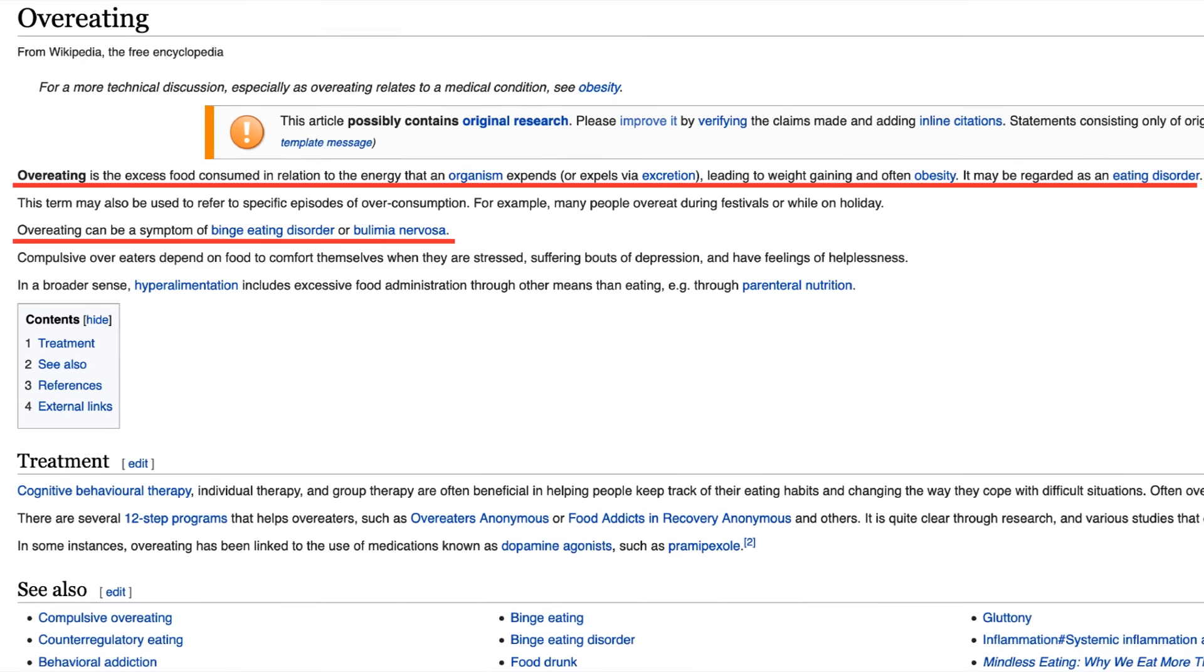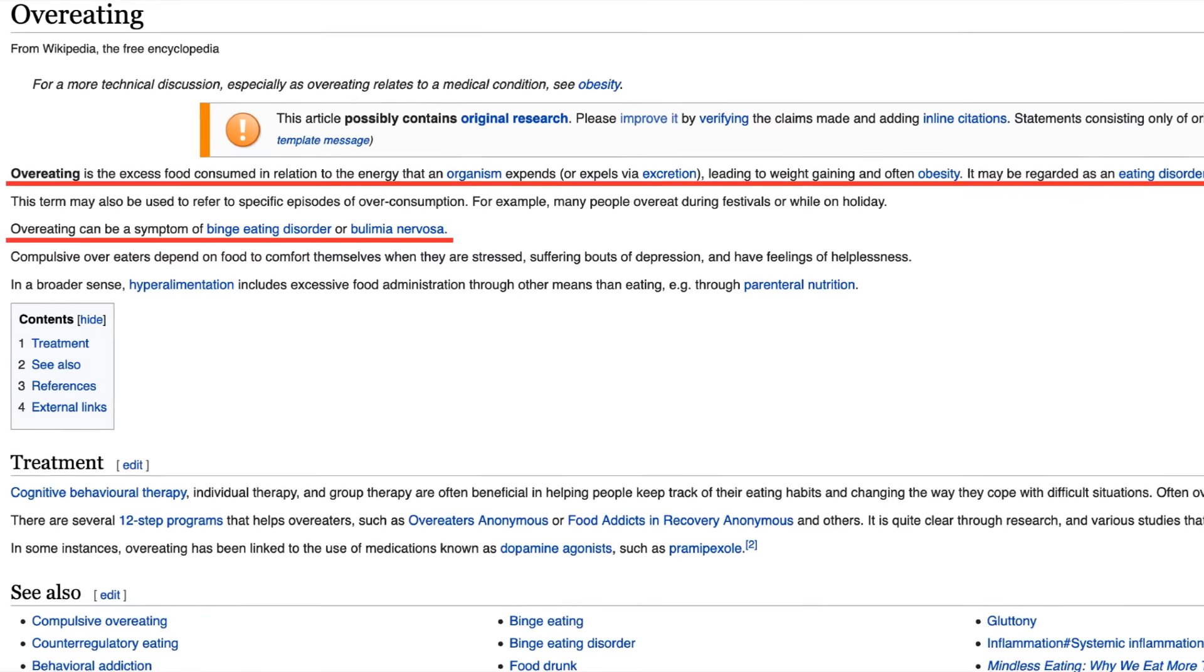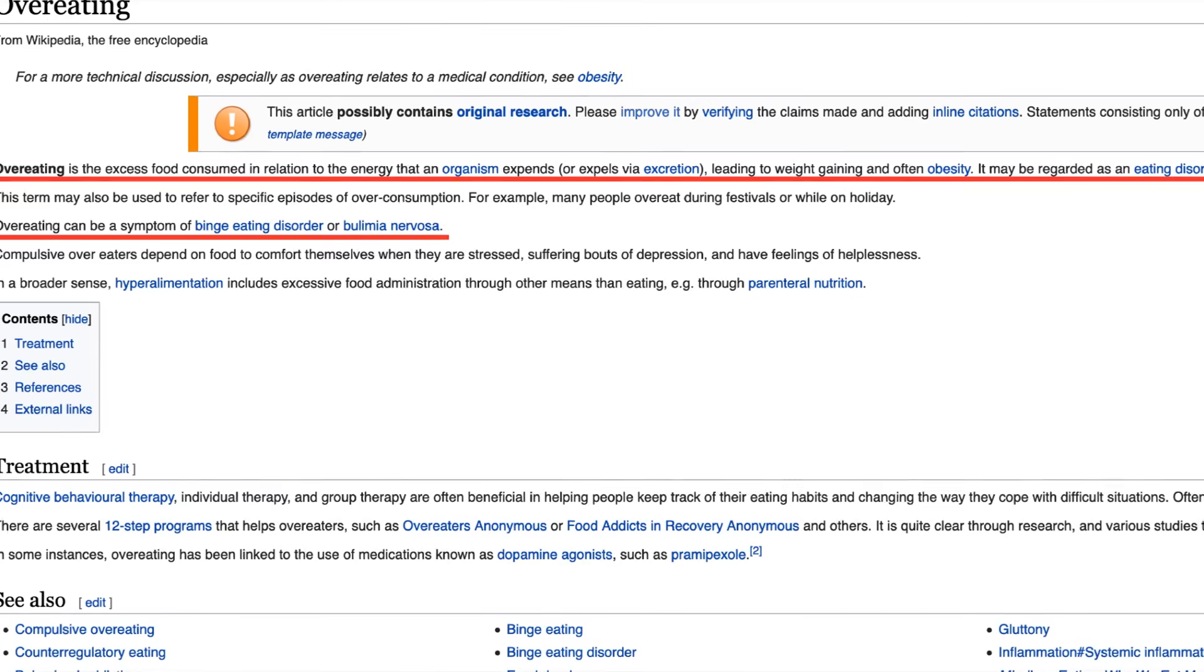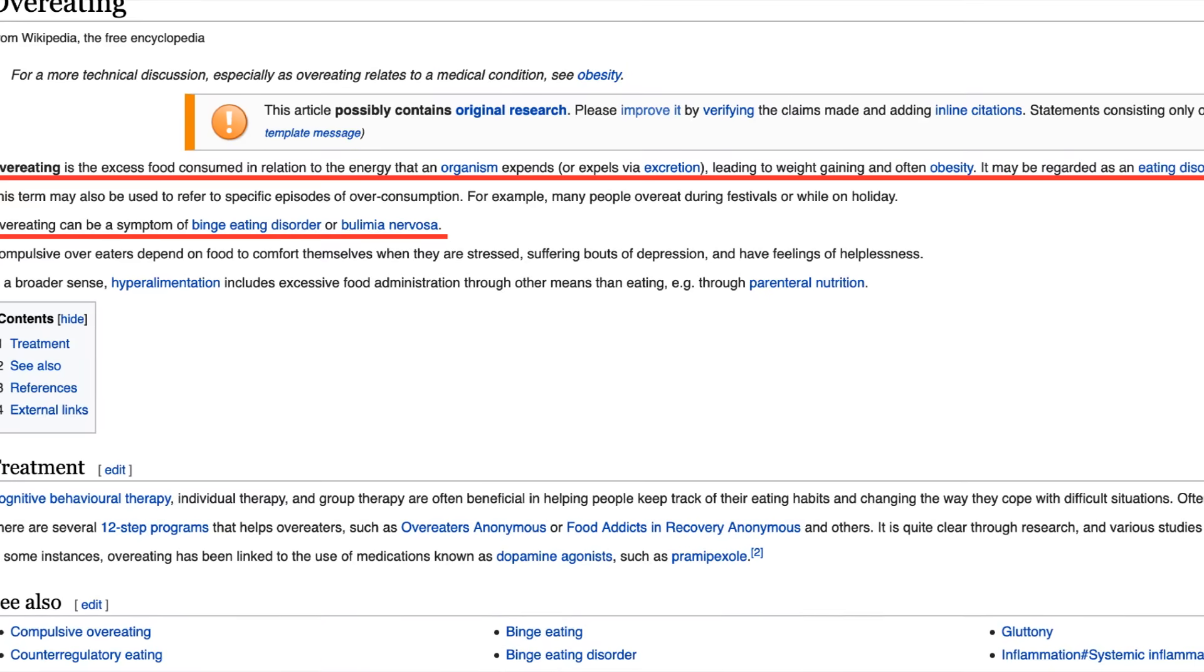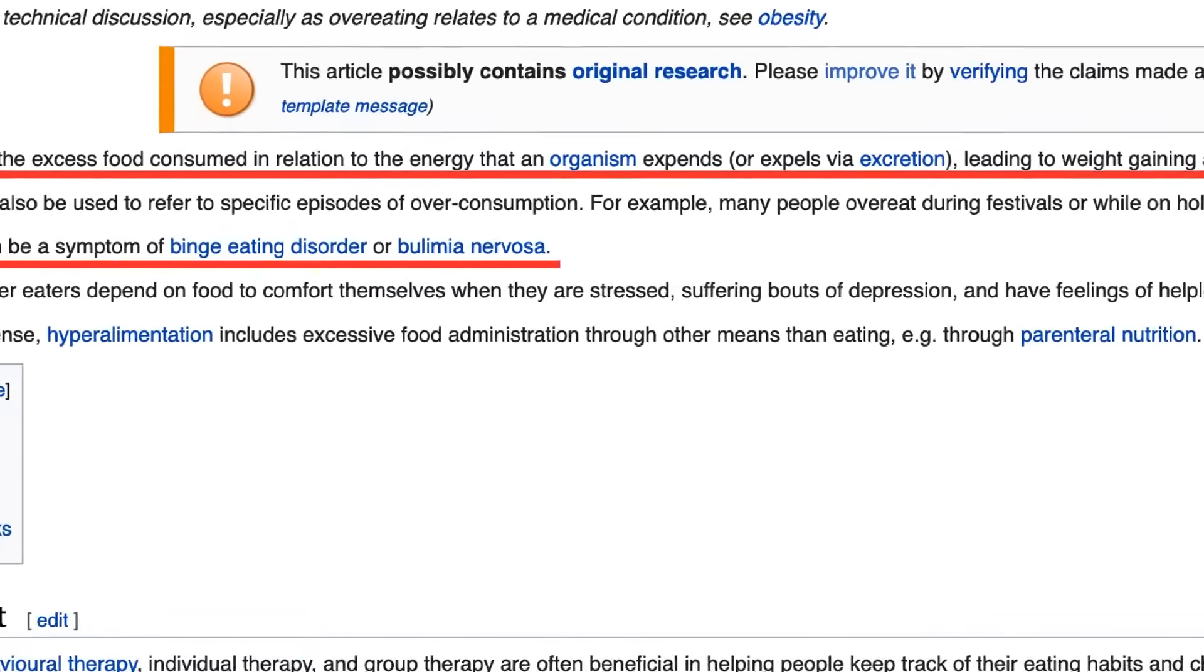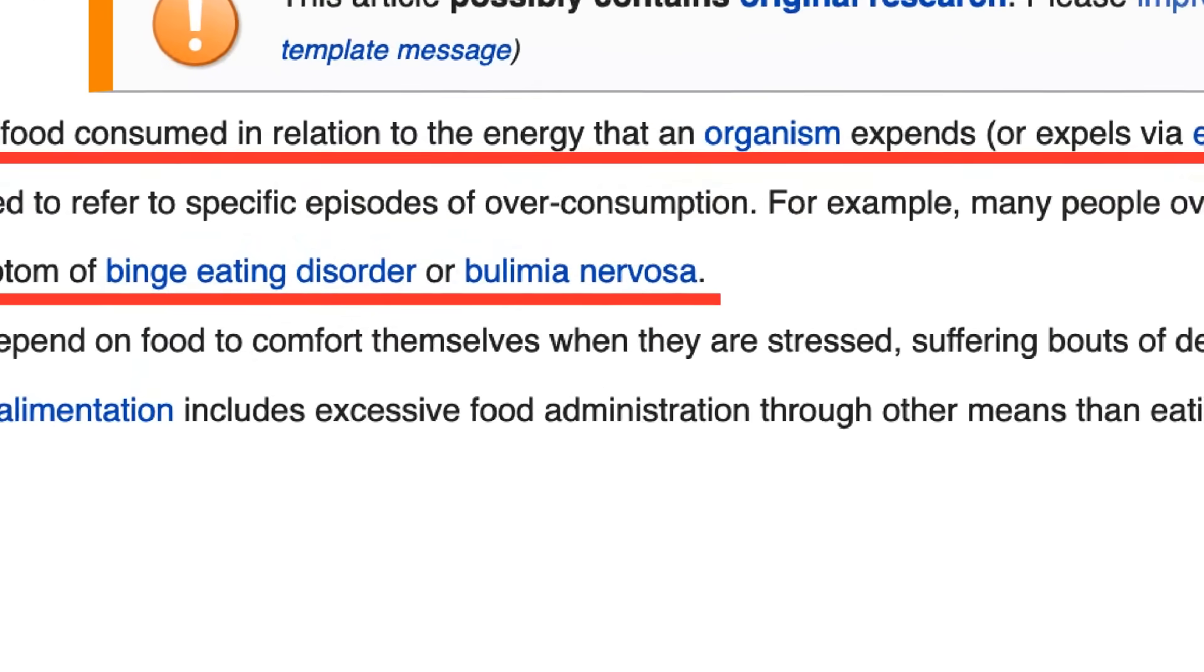According to Wikipedia, overeating, or hyperphagia, is defined as excess food consumed in relation to the energy that an organism expends, leading to weight gain and often obesity. It may be regarded as an eating disorder and can be a symptom of binge eating disorder or bulimia nervosa.